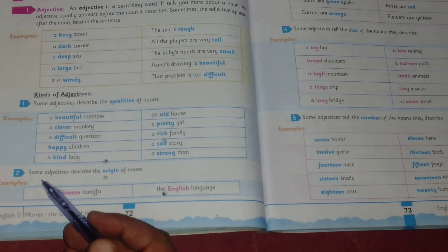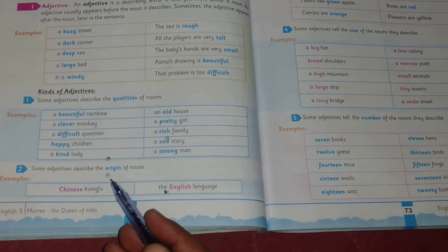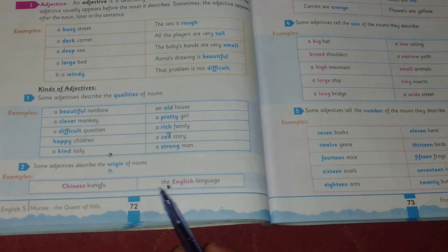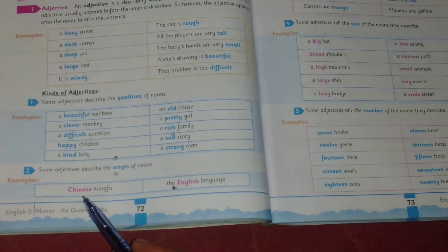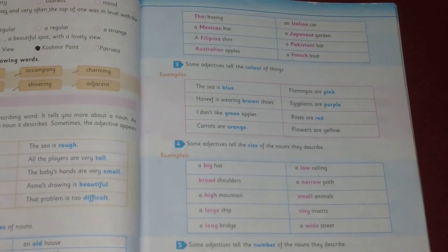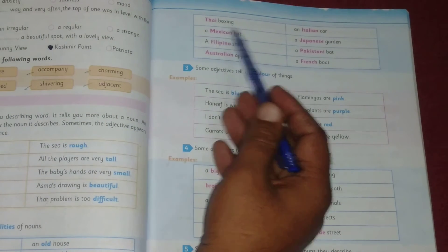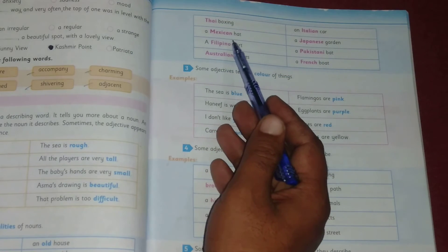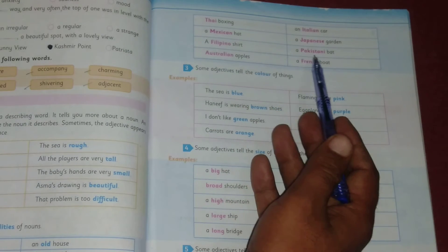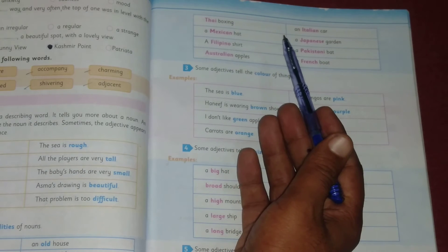Number two: some adjectives describe the origin of nouns. Some adjectives describe the origin. Examples: Chinese, the English language. These are adjectives of origin. Next, page number 73. Thai boxing, an Italian car, a Mexican hat, a Japanese garden, a Filipino shirt, Pakistani bed, Australian apples, a French boat. These are adjectives of origin.